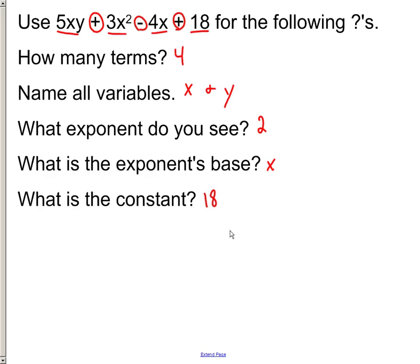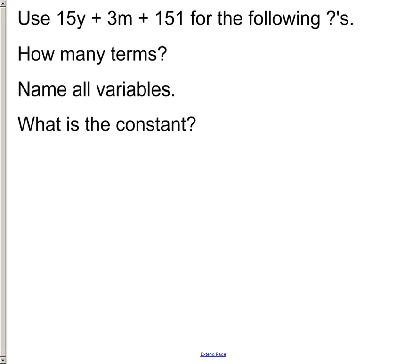Now, sometimes you won't see constants in here. Sometimes you won't see exponents. It's very fluid, and you just have to stick with the basic definition to get you through the reasoning. So how many terms do we see here? Well, here's a plus sign, here's a plus sign. We look for any plus or minus signs, and then see what's left over, how it's divided up there. I see three different terms. The variables would be y and m. And what's the constant? It's a term without a variable, and 151 is the only term without a variable.